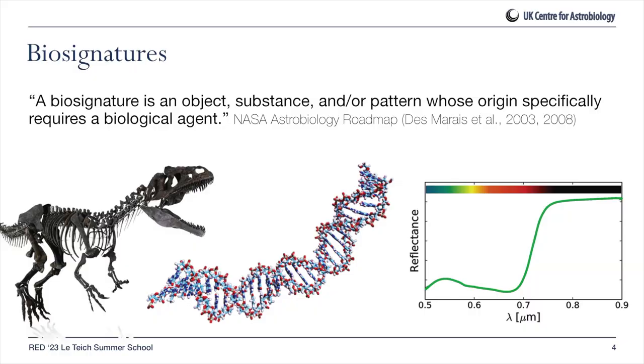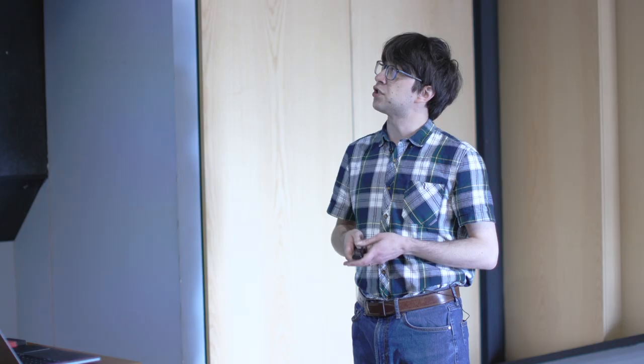These are lines of evidence that give us some more or less direct or indirect indication that life is or was present. These proxies we call biosignatures. You may have heard this term many times before. There are various definitions out there in the literature. A popular one is that a biosignature is an object, substance, and/or pattern whose origin specifically requires a biological agent.